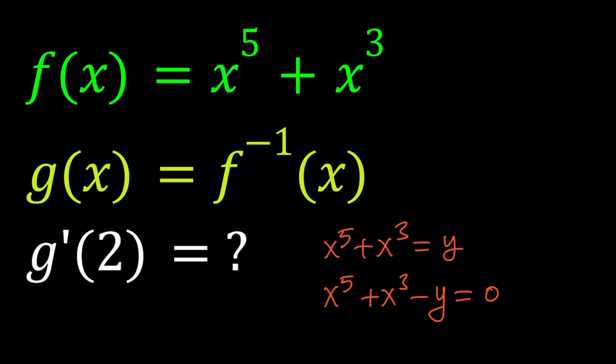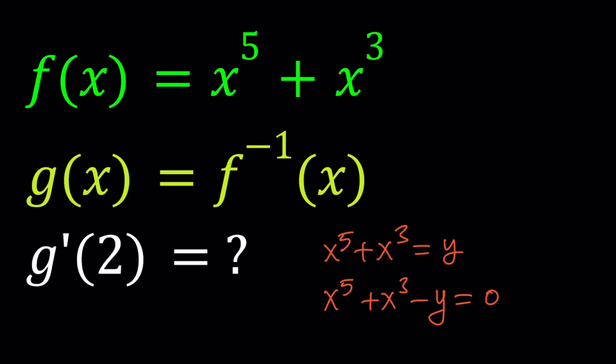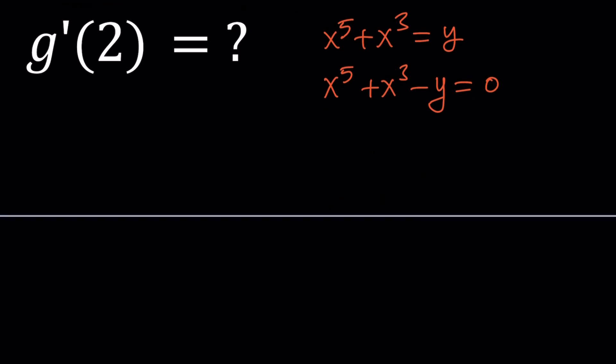We are given f(x) and g is the inverse of f(x), and we're supposed to evaluate g', the derivative of g at 2. So we're going to start by setting y = x^5 + x^3.